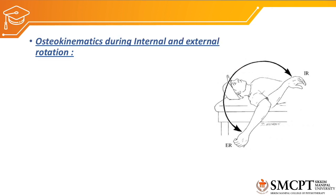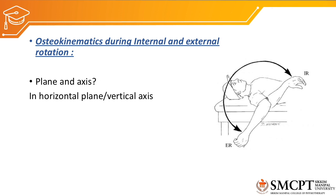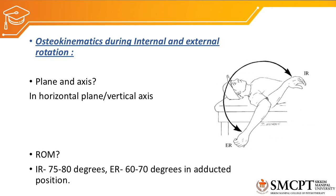Internal and external rotation of the glenohumeral joint occurs in the horizontal plane and vertical axis in anatomical position. The range of motion for internal rotation is 75 to 80 degrees and for external rotation is 60 to 70 degrees in the abducted position. In osteokinematics you need to mention three points: the movement occurring at the joint, the planes and axis of that movement, and the range of motion.